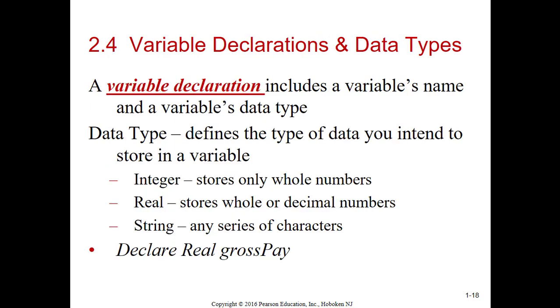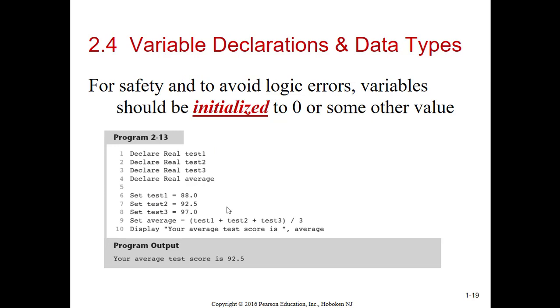A variable declaration includes the variable name and the data type. Data type tells the computer what type of information you're storing in that variable. In pseudocode, they have four really, though only three are here. They have integer - that stores whole numbers only. Real stores whole and decimals. String is any series of characters. And they also have a boolean value, which either stores true or false. Here's the way you do it in pseudocode: Declare real is the data type and the variable name. If you wanted to give the initial value, you could say equals 1,000, and that would go ahead and put initial value in there if the problem asks for that.